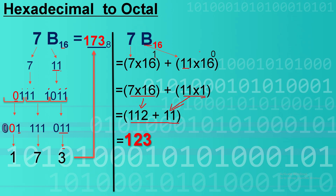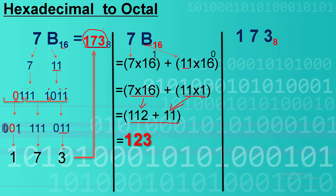So this is the solution for the hexadecimal conversion. Now to prove that 173 octal, our answer, is the same as 123 decimal, we will solve the octal conversion.